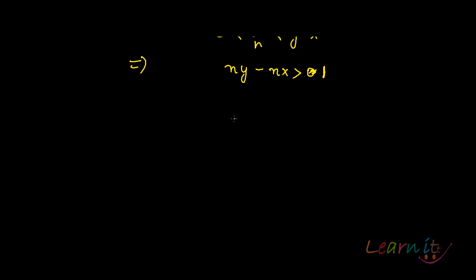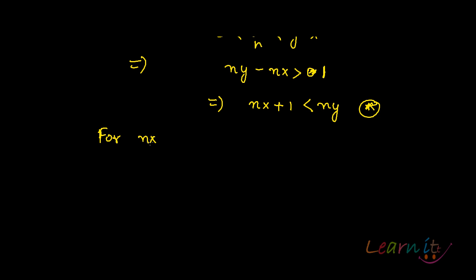So what does this mean? This implies that NX plus 1 is less than NY — the symbol changes when I take N to the other side. So NX plus 1 is less than NY. Now for NX, there exists some integer M such that NX lies between M and M plus 1. Since NX is a real number, M is some natural number, and NX will lie between these two.